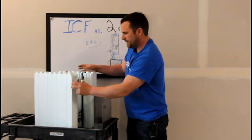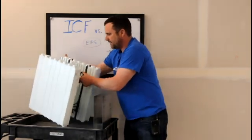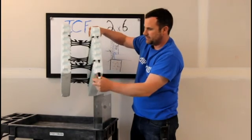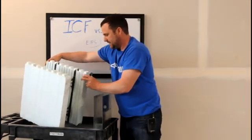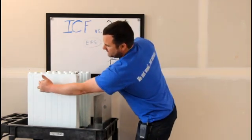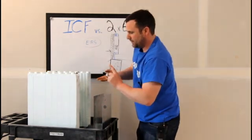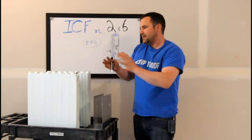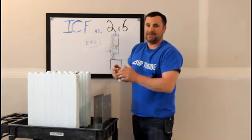The other thing that keeps it very simple is we have these snap ties that are every 8 inches on center. Those are designed to take the force of concrete while you pour, but then every 8 inches you have these ties - you can attach drywall to it, you can attach your cement board or vinyl siding or stucco. Very simple, it's built into the system.